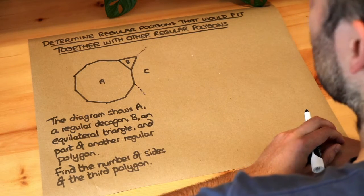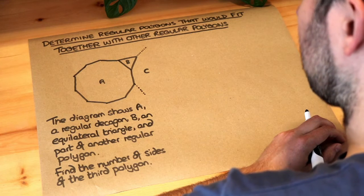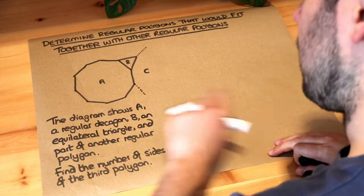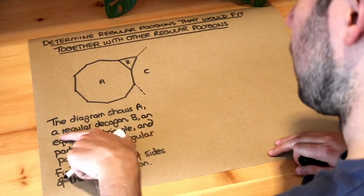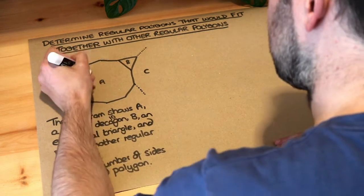Hello and welcome to this Dr Ross video on determining regular polygons that would fit together with other regular polygons. Let's read this question. The diagram shows A, this shape here, a regular decagon. Decagon means ten-sided, so this is ten sides.